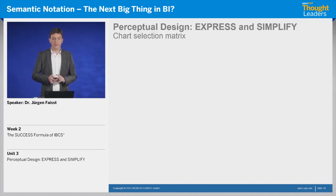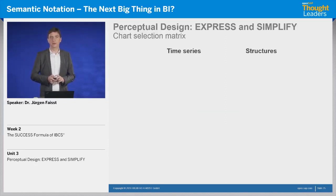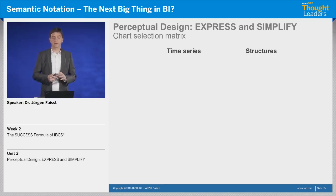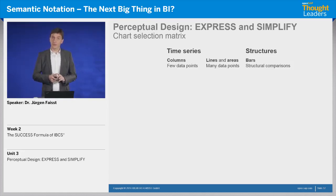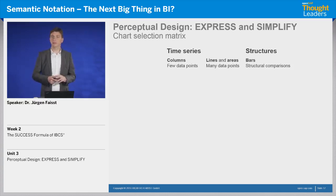If we take a systematic approach to that, we could look at a kind of chart selection matrix. We think that if we use the same chart type for a time series all the time, and a different chart type for structures, that would help. For instance, we use column charts and line charts always for time series, and bar charts for structures. We use column charts for time series with only a few data points, and if we have a lot of data points — say, daily information over a year — then we use lines.